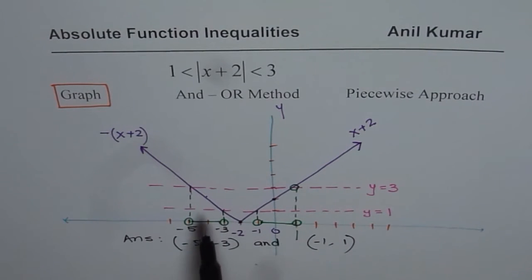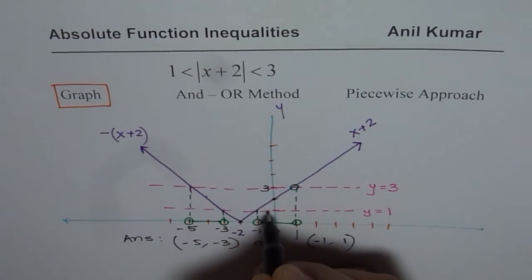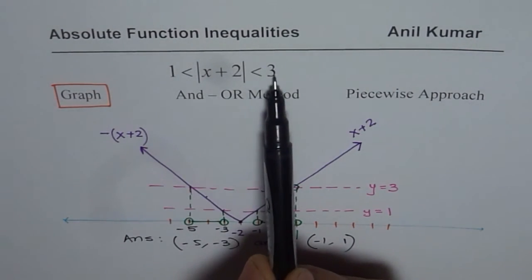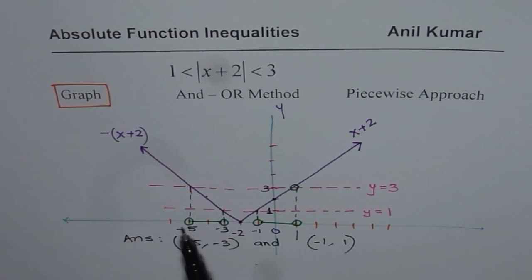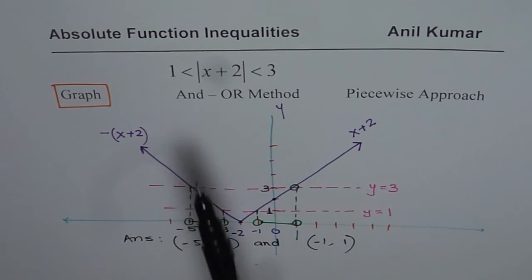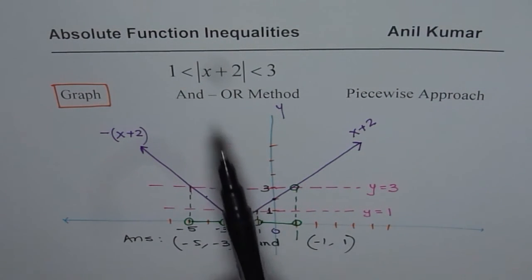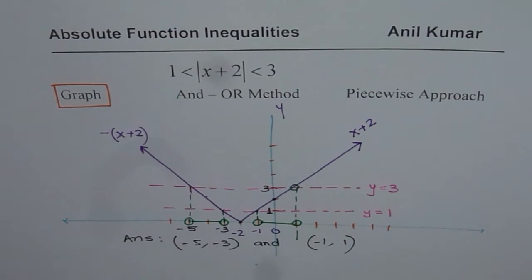So you can just sketch the function, draw the lines, and we know it is within this position. Beyond minus 5, it is greater than 3. So these are the y values, 3 and 1. So beyond, on the left side, it is greater than 3. So that is not the solution. The solution is that this has to be less than 3, within 3 units away and outside 1 unit. And that brings us to the second method, which is the and-or method. We will now discuss the and-or method in the next video. I hope that helps. Thank you and all the best.